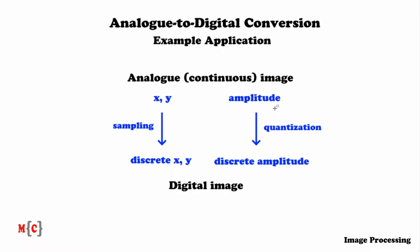An analog image has continuous x and y coordinates. It also has a continuous amplitude. Now, for a digital image, we want these values to be discretized. The x and y coordinates are discretized by using a technique called sampling. And the continuous amplitude is discretized using quantization.